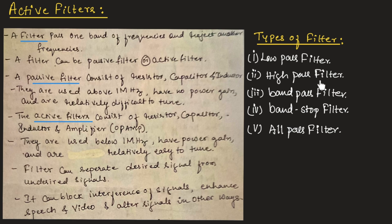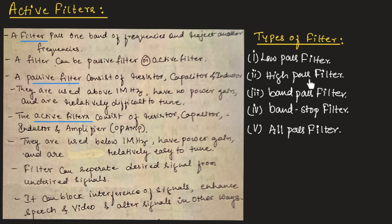A high-pass filter passes the high frequency and blocks the low frequency. A high-pass filter allows signal with a frequency higher than a certain cut-off frequency to pass, and attenuates the signal with frequency lower than the cut-off frequency.